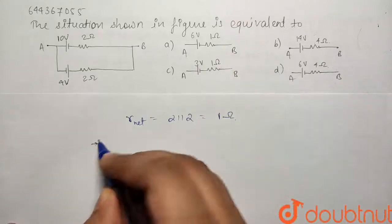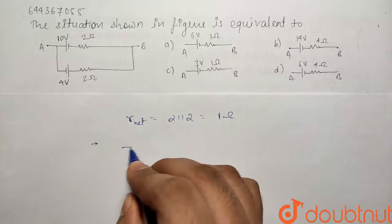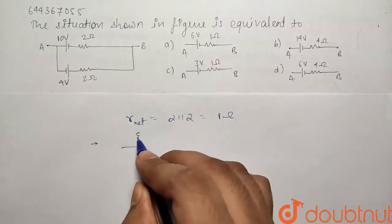And if I talk about the potential, we know that if we have two batteries of EMF E1, resistance R1 and another battery of EMF E2 and resistance R2.